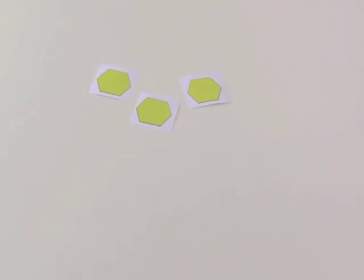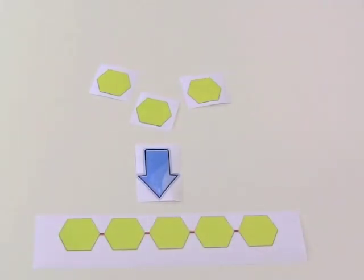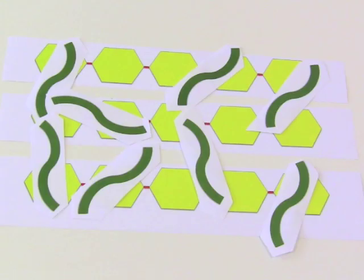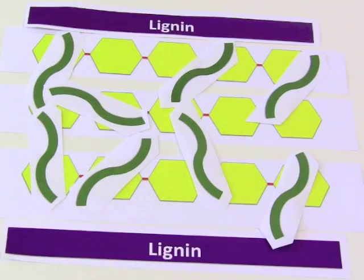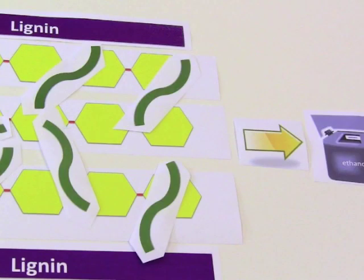Cellulose is actually made of building blocks of glucose, a simple sugar. In plants, these building blocks are linked together into long chains inside the cell walls. These glucose chains are found in a complex web of other sugars, like hemicellulose, and a structural material called lignin. This web protects and supports the high energy sugars.